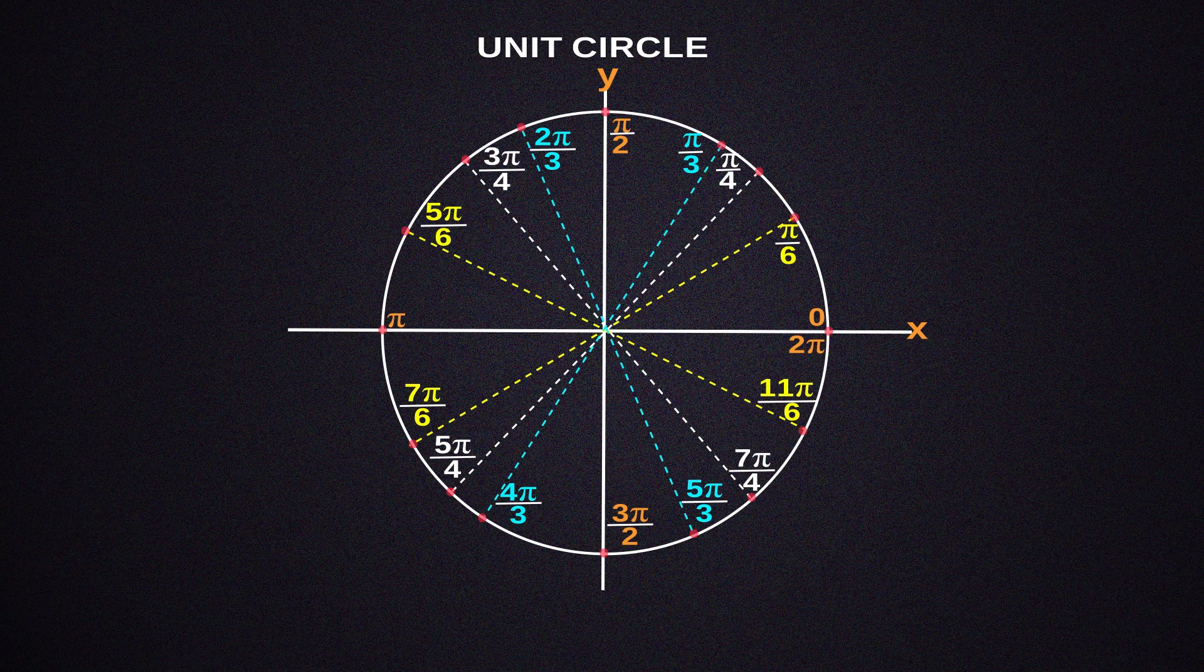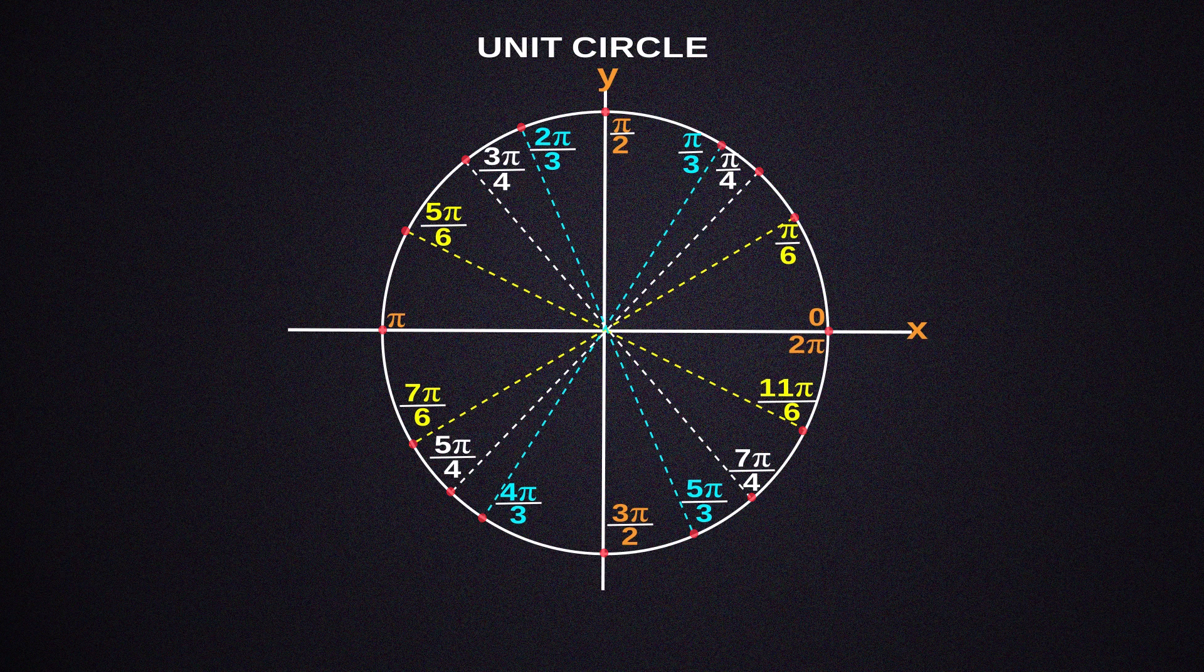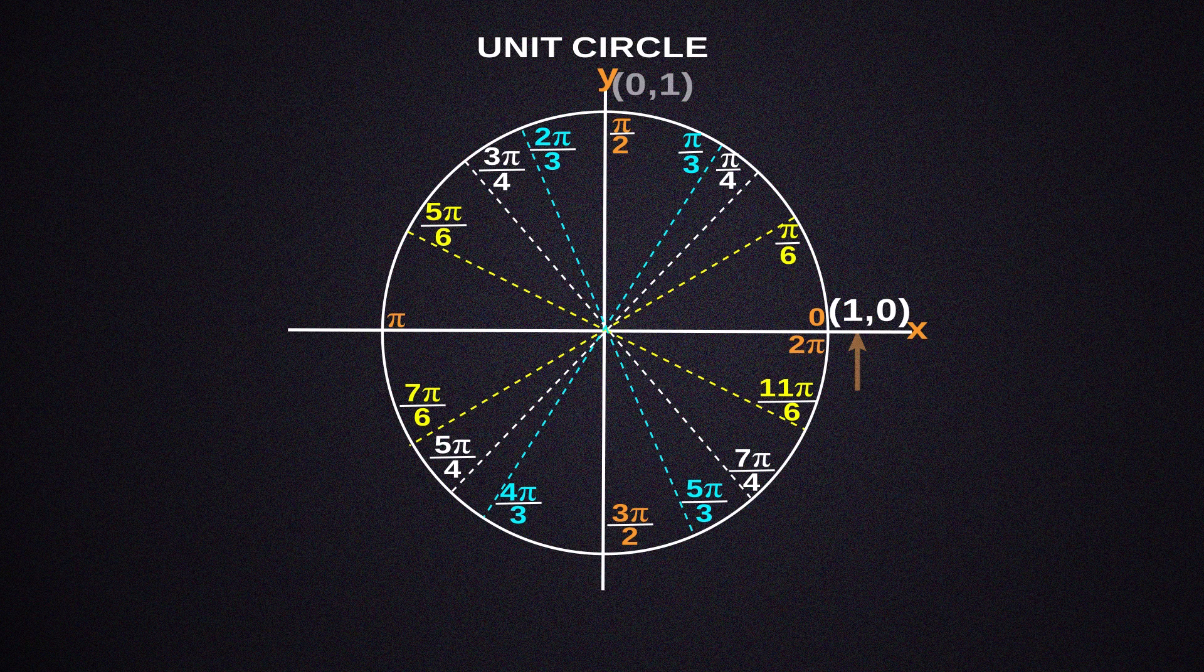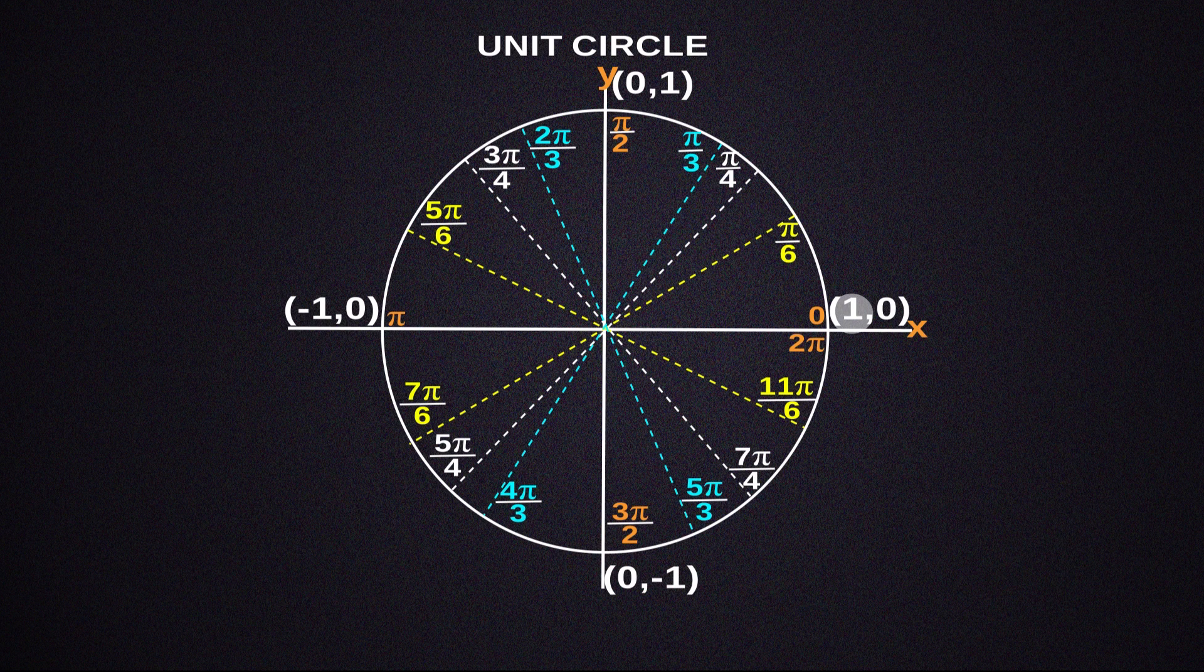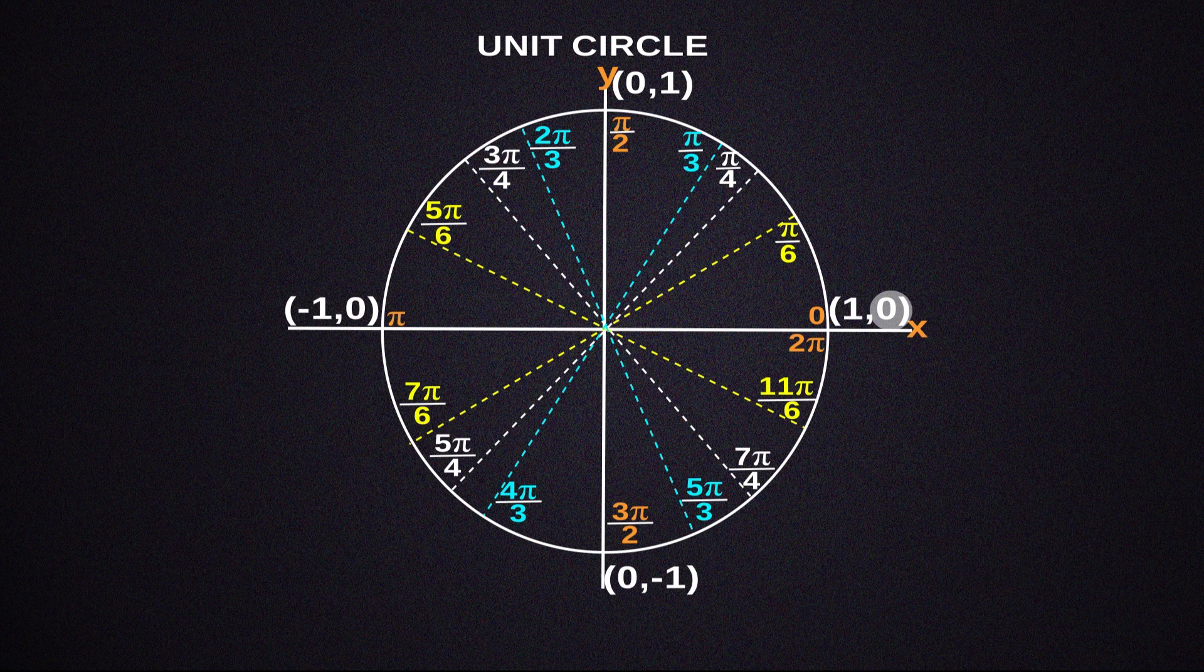Every angle on a circle has a point where it contacts the circle. The coordinates of our point are x and y. The x coordinate is one for this angle, which is zero. The x distance is one, since it has a radius of one. In the y direction, there is no distance.